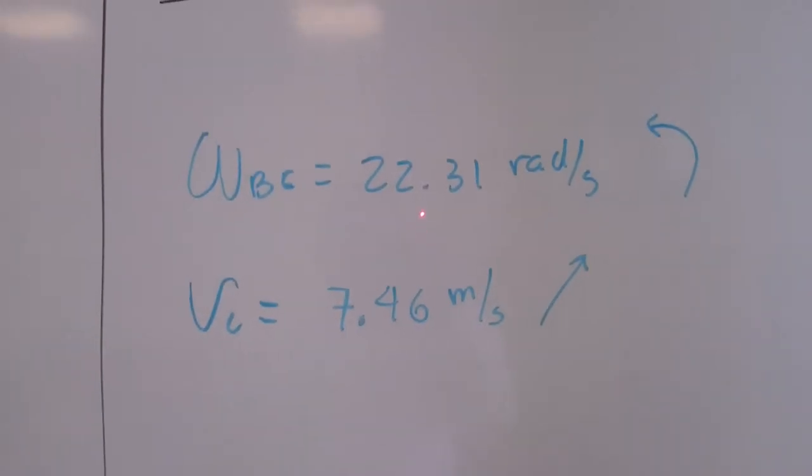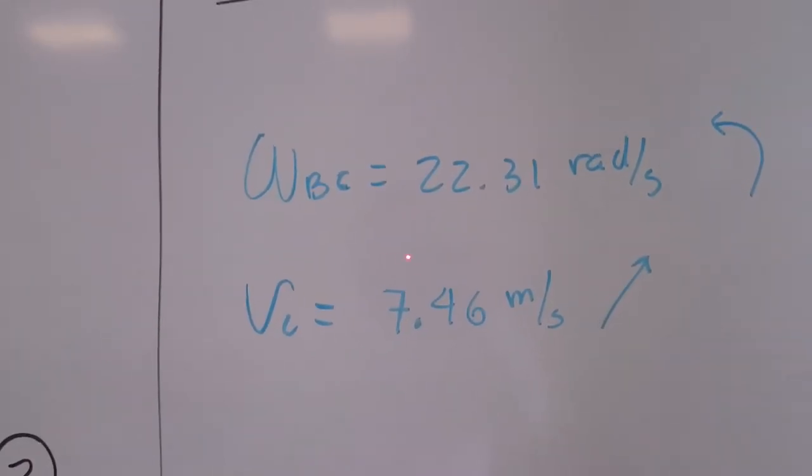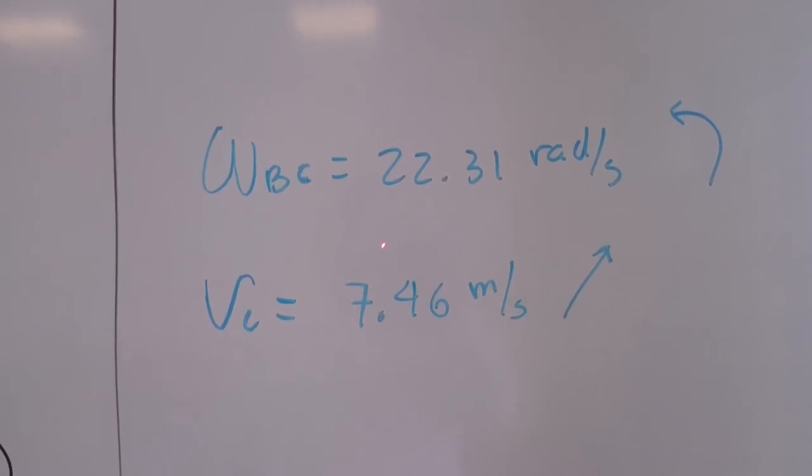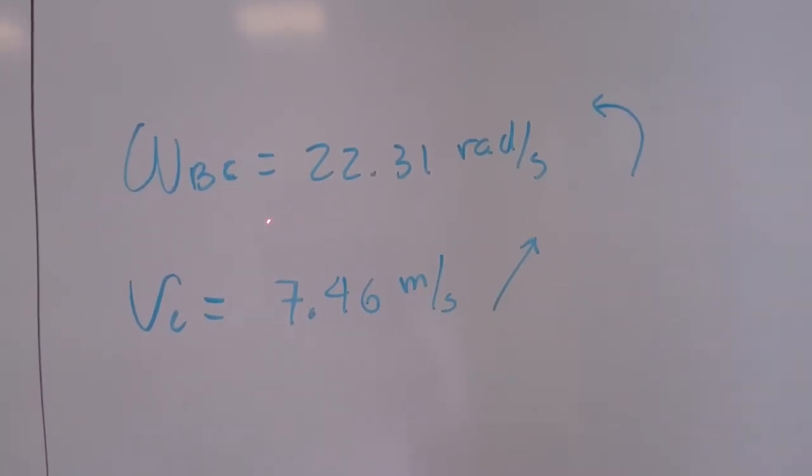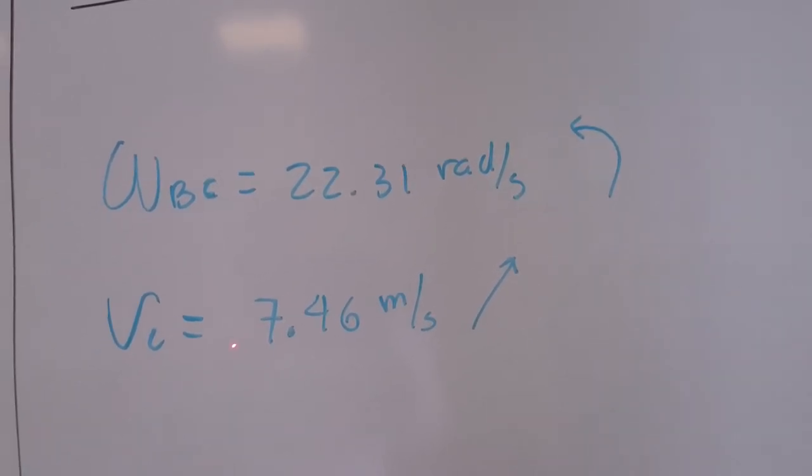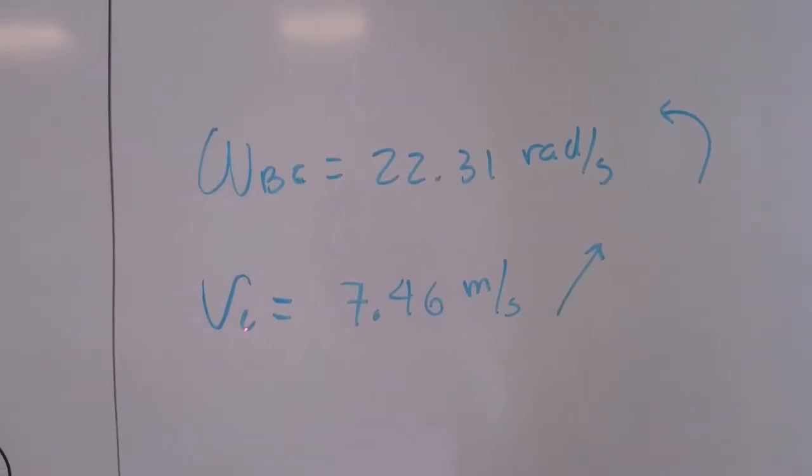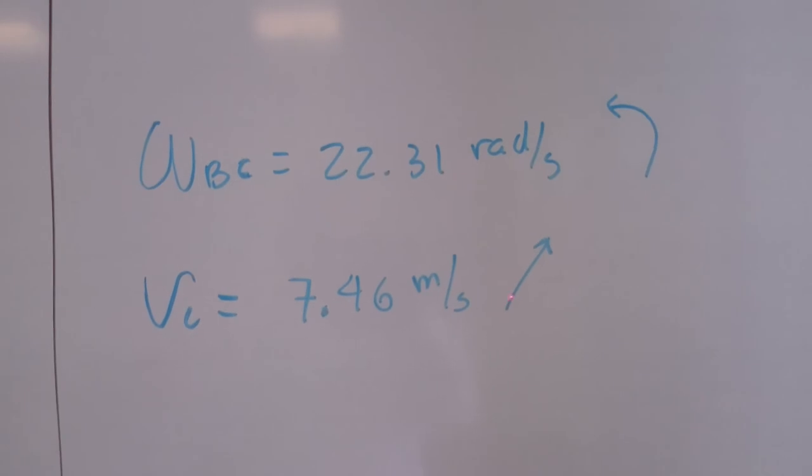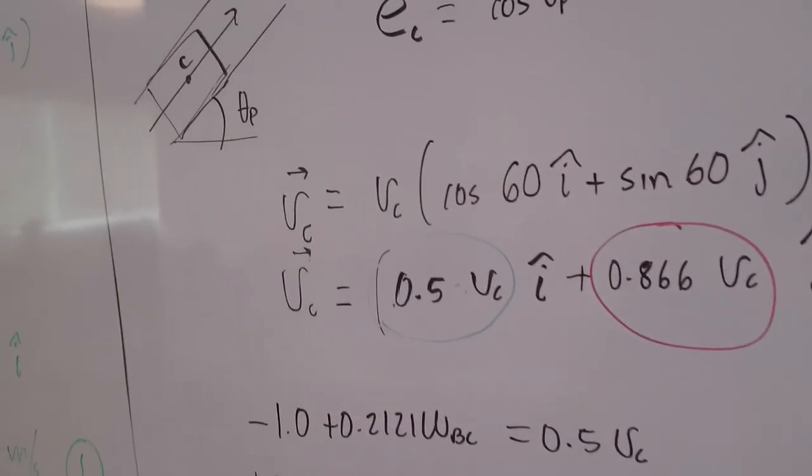In this vector method, the signs indicate the direction. Okay? So both are positive, indicating that in the case of the angular velocity it's counterclockwise, and in the case of the velocity of C, it's going up the plane.